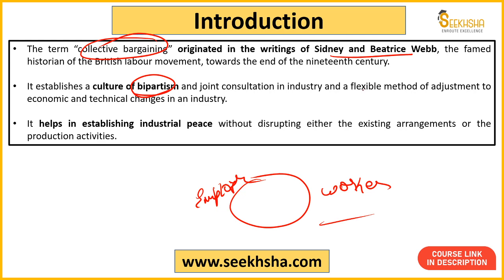Basically you can say this is a flexible method, because in collective bargaining neither the employer nor the worker assumes that only what I want will happen. The concept says you must assume: yes, we are ready to give and take. We will give something, and we will receive something. So basically it's a flexible method so that whatever economic and technical changes are coming in the industry, workers and employers can deal with them together. This will establish industrial peace.